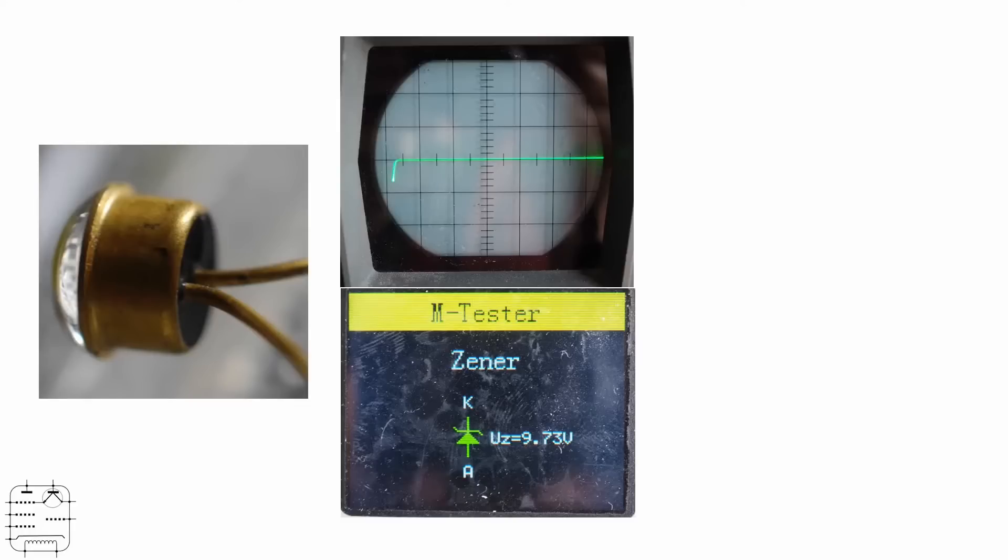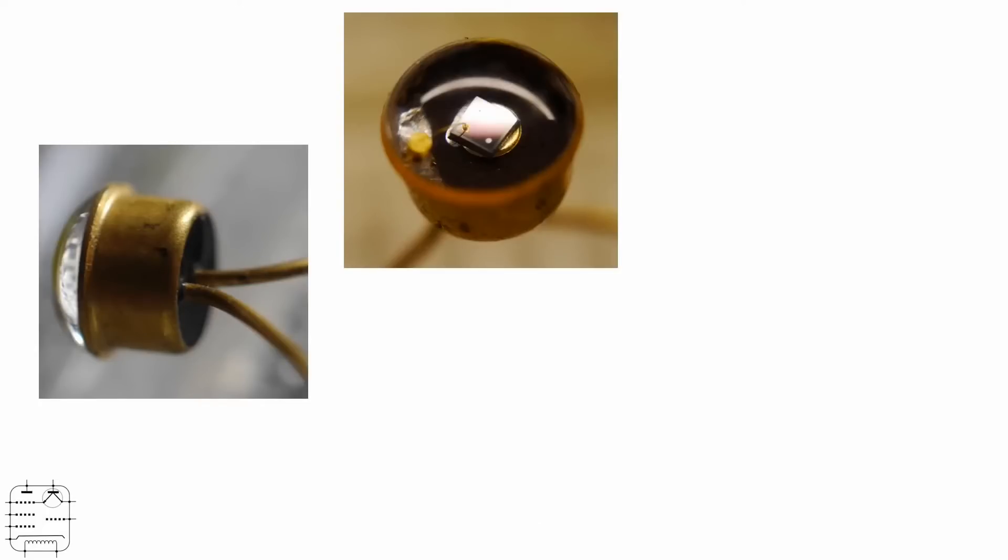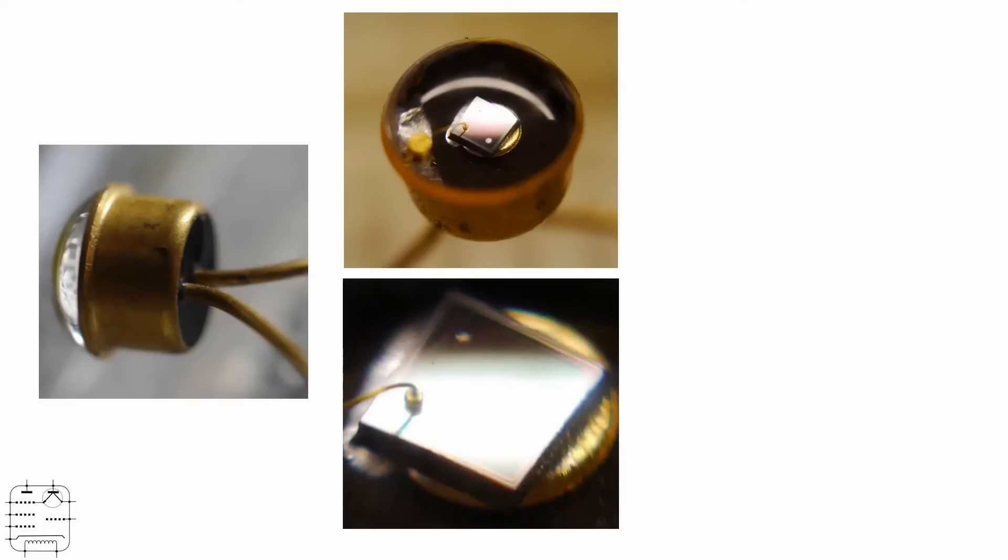On the component tester it says it's a Zener with 9.7 volts as its Zener voltage. Don't know whether it is a Zener or not, but it's clearly a diode. In the opposite direction you get absolutely nothing at all. If you look closely at it, it does look a little bit like some of the classic descriptions of photodiodes I've seen.